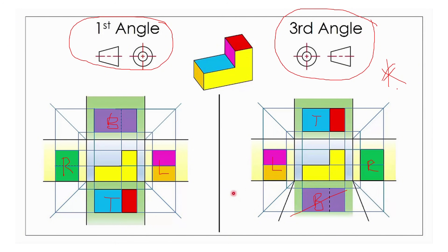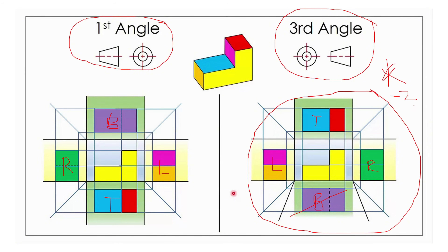You should know this by now because you have learned it in grade 10 and implemented it in grades 10, 11 and 12. If you get confused and switch the views, there will be a penalty of minus 2. So just be aware of that. Top view will be at the top, left view on the left, right view on the right, and the front view will be in the middle. You will use a 45-degree line to project widths over to the other view.